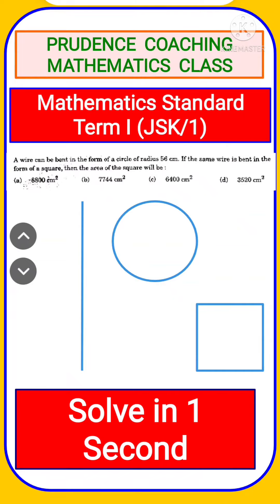Let's start with problem number 26. A wire can be bent in the form of a circle of radius 56 cm. If the same wire is bent in the form of a square, then what will be the area of the square? You are asked to find out the area.